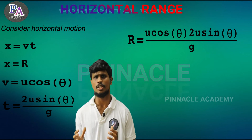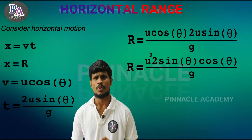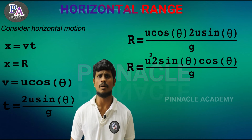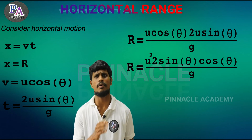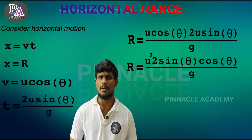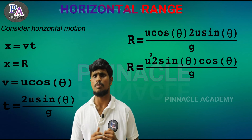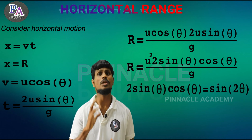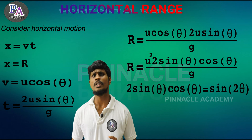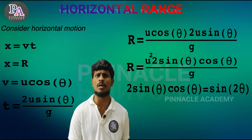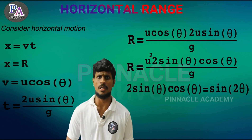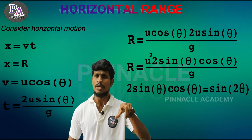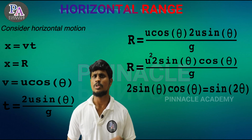I will rearrange this equation. r is equal to u squared sinθ cosθ divided by g. We can apply a trigonometric identity: two sinθ cosθ equals sin2θ. So we write u squared with sin2θ.